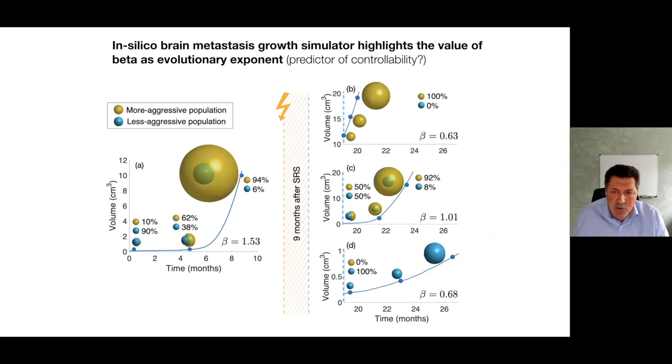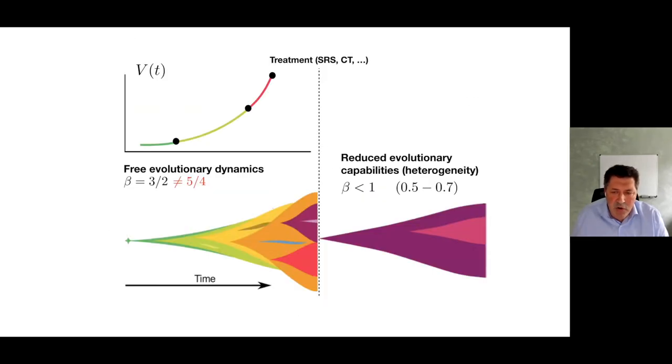This is only computed from volumetric measurements on the magnetic resonance images. It's a bit fun. Only with three points, three measurements, you can know what is the evolutionary status of the tumor.